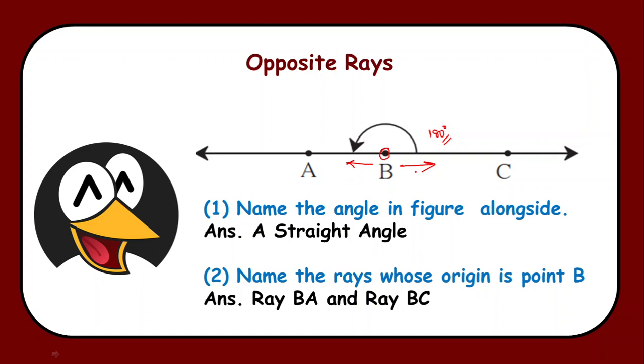Now children if I want to comment about this ray BA and BC, both of them start with a common starting point or you can say a common origin. Then second thing is what? Second thing is they are moving in exactly opposite direction.